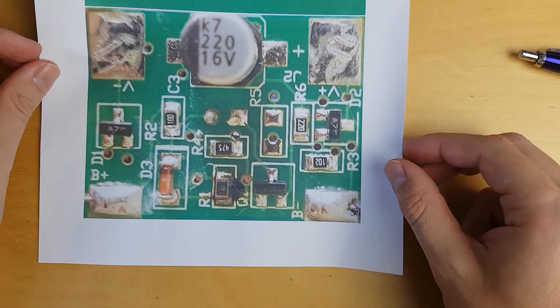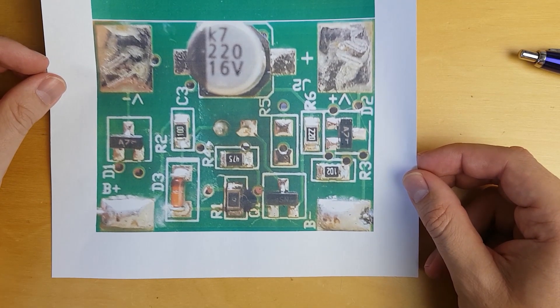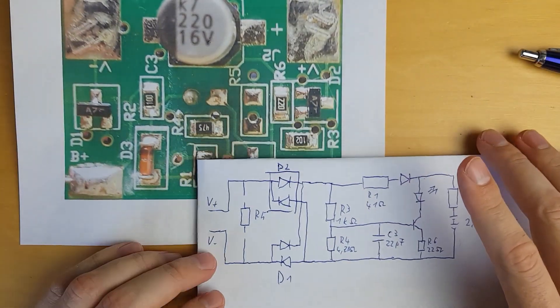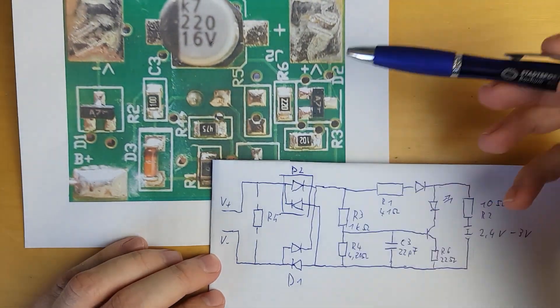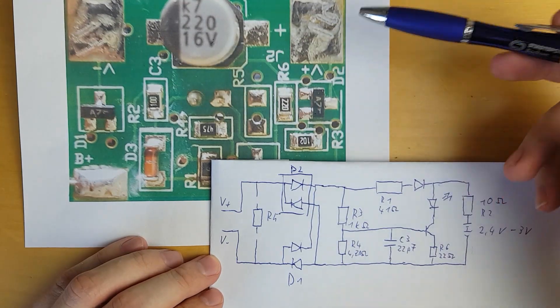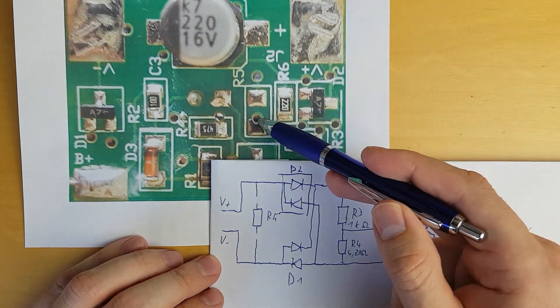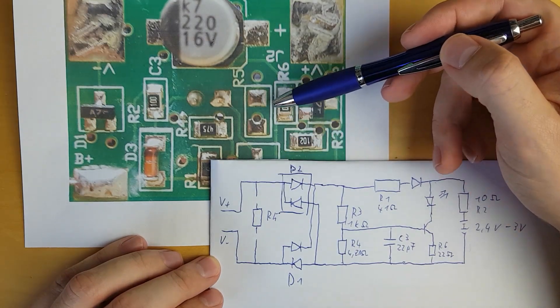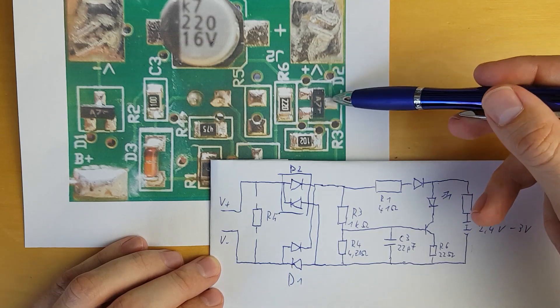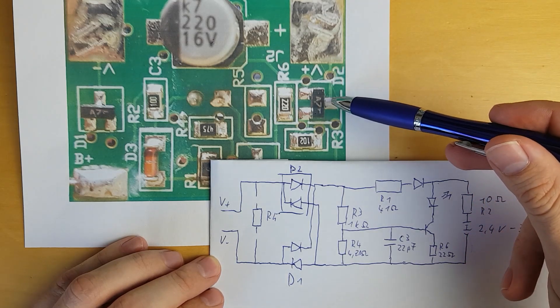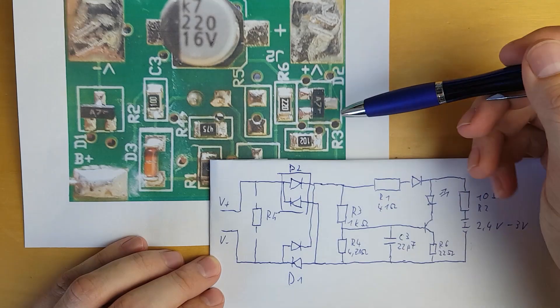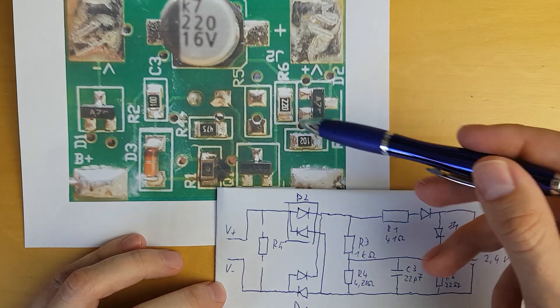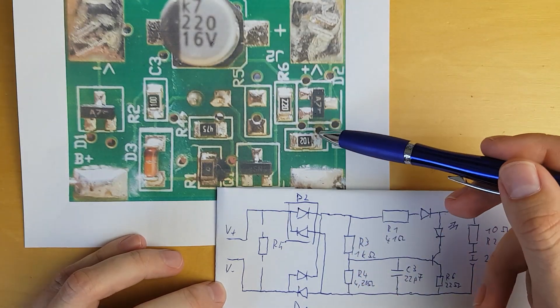And here we have the circuit diagram. These are the terminals from the generator: V plus and V minus. Here we have a generator load capacitor R5, which is optional. Then we have a full bridge rectifier made of these two diode packages, double diode packages.